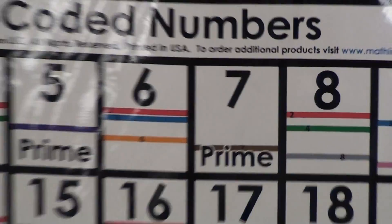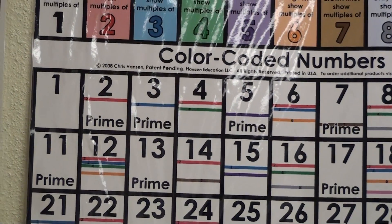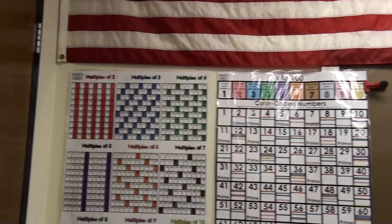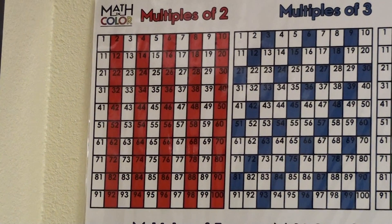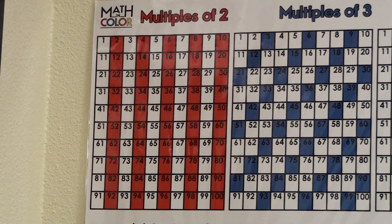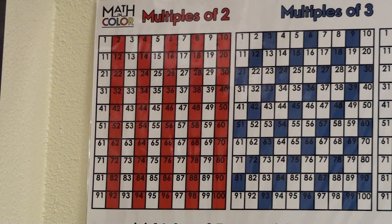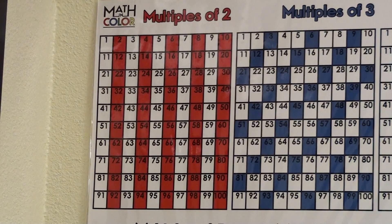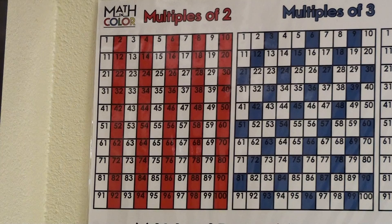This is true of the entire chart. It's visibly apparent that all multiples of 2 are even numbers using this simple activity. Please visit mathandcolor.com to order these posters. Thank you.